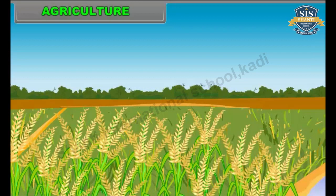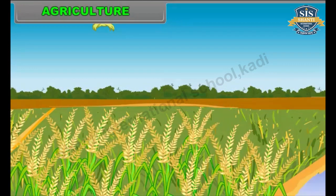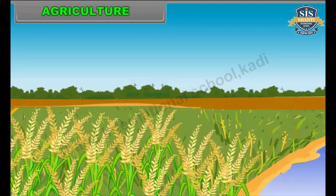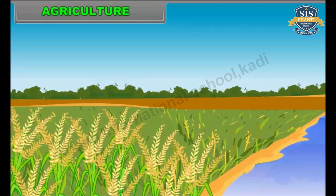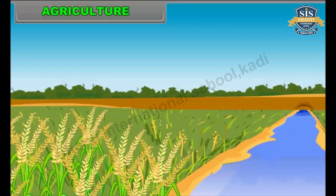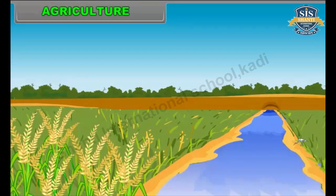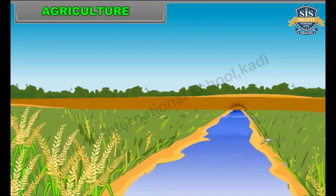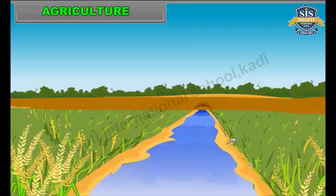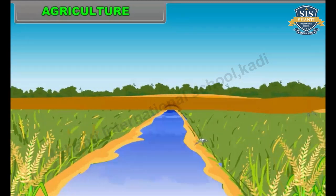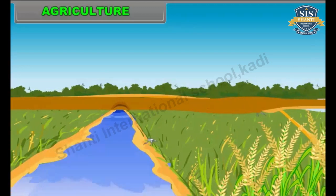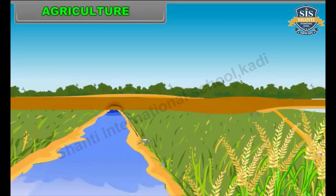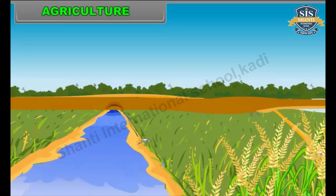Agriculture is the art and science of raising plant life from the soil. Agriculture is one of the oldest activities of humankind, and today it includes not only cultivation of crops but also domestication of animals. Agriculture is the most basic resource as it provides food, clothing and shelter to mankind.